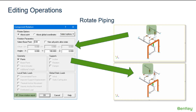The user can also determine whether or not the rotation report should display after the rotation is complete using the Show Rotation Report checkbox. Regardless of whether this box is checked on or not, the report will still be saved in the model folder as a .rot file.